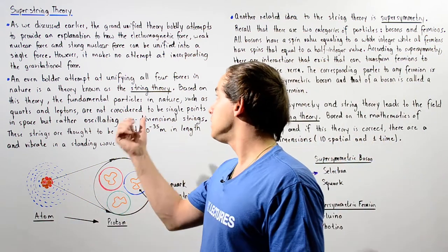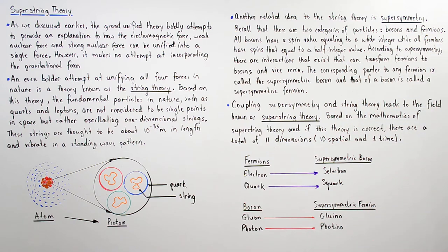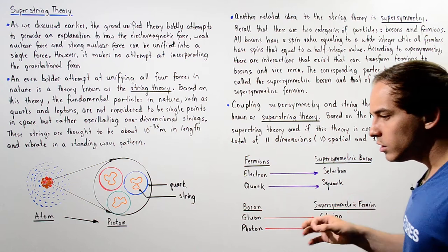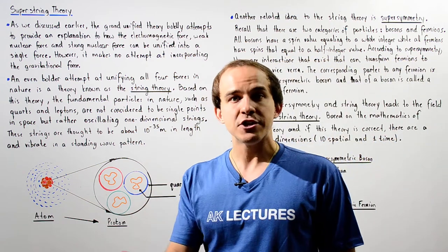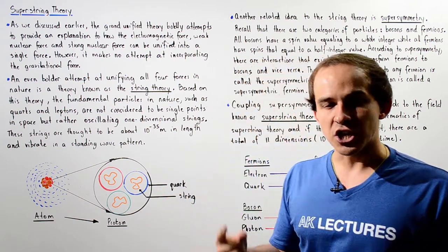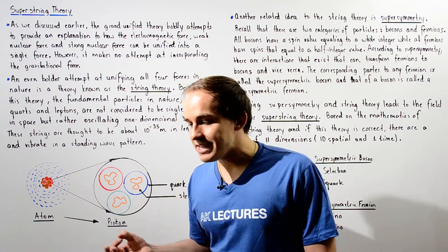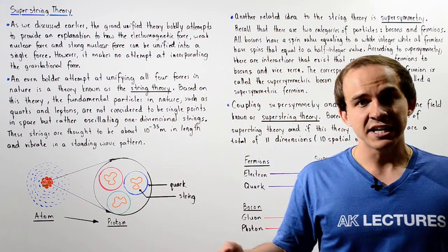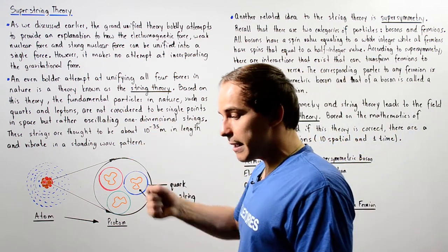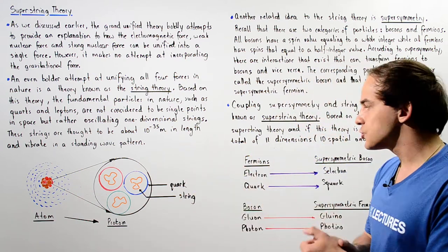If we couple the field of string theory and supersymmetry, we get a field known as superstring theory. Based on the mathematics of superstring theory, and if this theory is actually correct, we see that our world actually consists of not four dimensions, but eleven dimensions. Ten of these dimensions are spatial dimensions, and the eleventh dimension is the dimension of time. The reason we can only see three spatial dimensions and not all ten is because the other seven spatial dimensions are basically coiled up into very, very small balls that we cannot actually see.